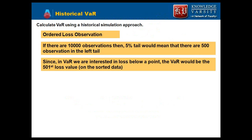This is the first aim statement: calculate VaR using a historical simulation approach. In historical simulation, as seen in Part 1, we arrange return data from lowest to highest, then select the percentile. For example, to find 5% VaR, we select the bottom 5% and identify which point has 5% of data below it.